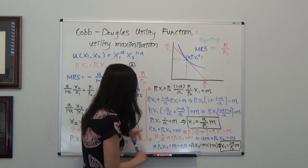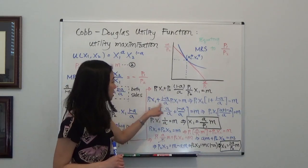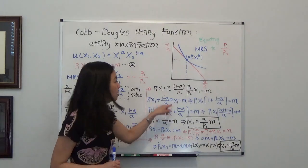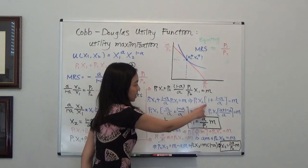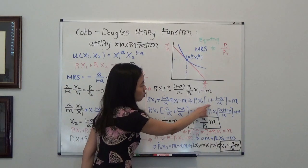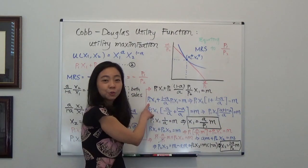So what is our next step? Notice we have p1x1 on both first and second term. So I'm going to pull it out. And I'm left inside the bracket I have 1. Because 1 times p1x1 is just equal to p1x1.